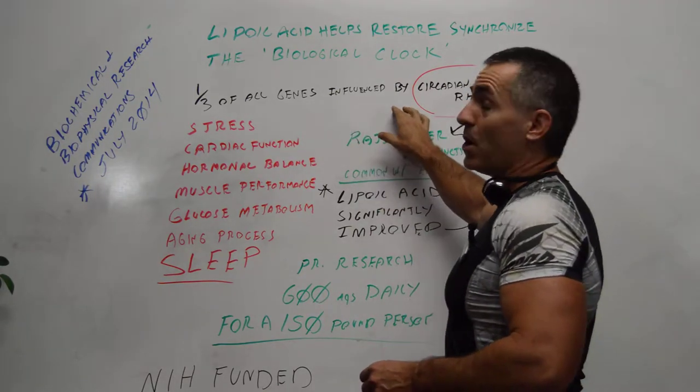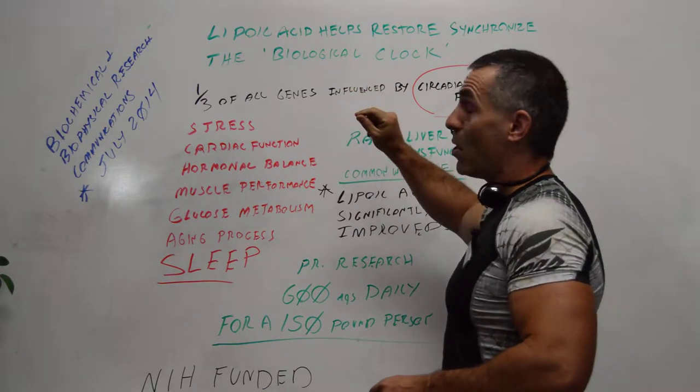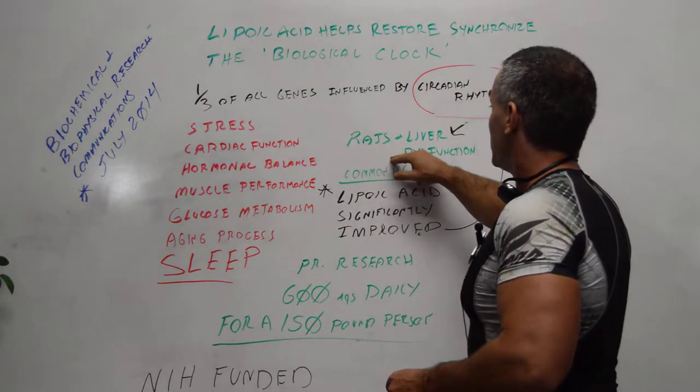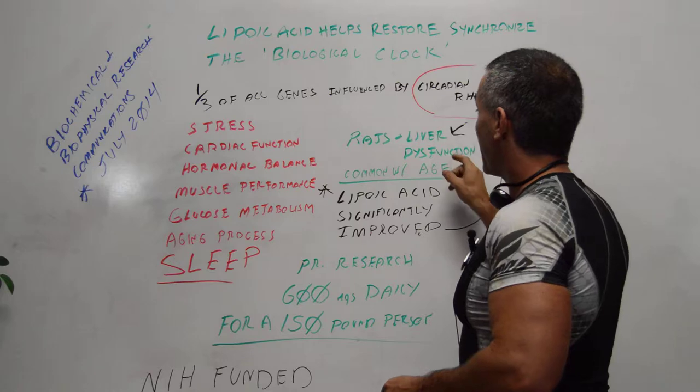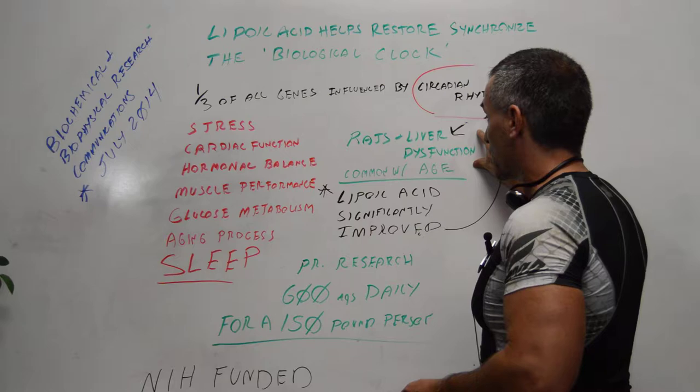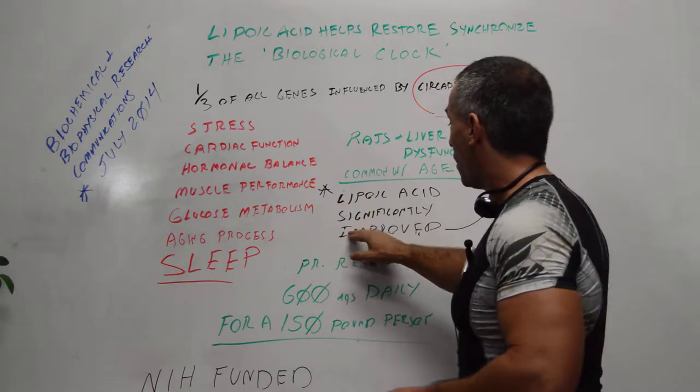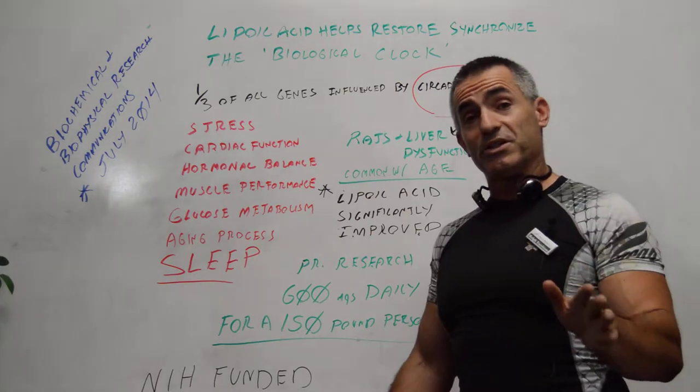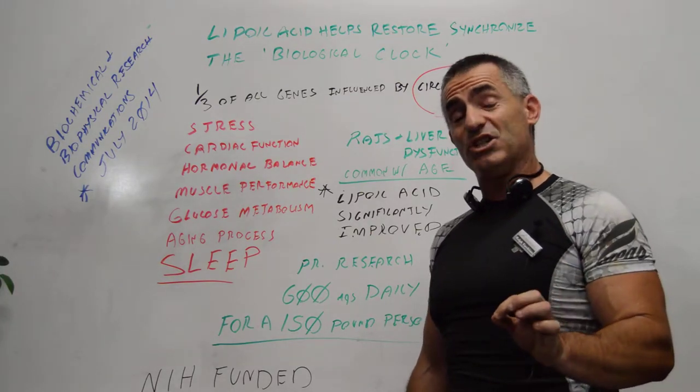They gave them lipoic acid and found out that lipoic acid fixed a good portion of the liver dysfunction and caused all these things involved in circadian rhythm to significantly improve. Now what does circadian rhythm affect besides just sleep?